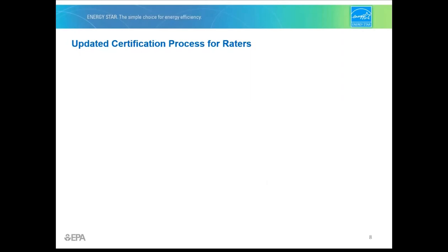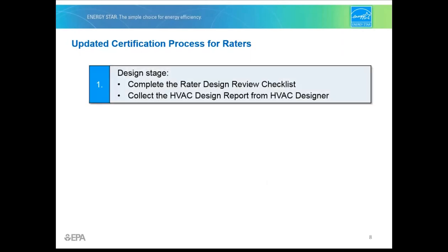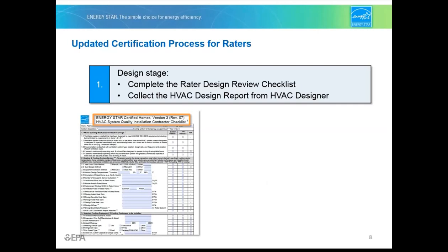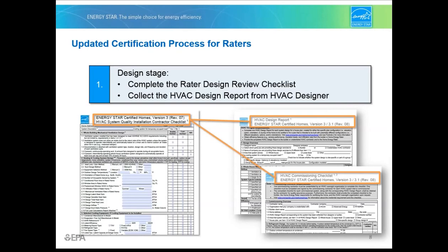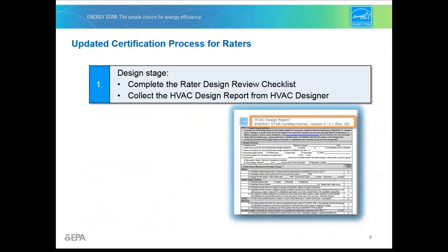Let's move on to the updated process for certifying a home and the role you'll play. At the design stage, you'll complete the rater design review checklist. Among other tasks, you'll review the HVAC design. With Revision 8, the HVAC system QI contractor checklist has also been split into two documents: the HVAC design report and the HVAC commissioning checklist. To review the HVAC design, you'll need to collect the HVAC design report — but this is the only design document you'll typically need. You'll no longer have to collect the full load calculations, the AHRI certificate, or separate documents for the ventilation design or air balancing.